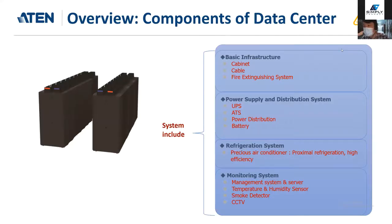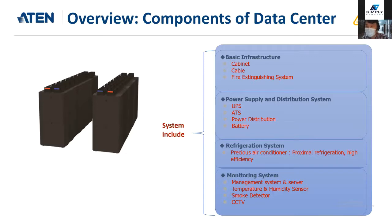I'd like to start with the overview components of the data center. The system includes basic infrastructure: cabinets for servers, cables, and fire extinguishing systems. They will have a complete power supply distribution system — UPS, ATS for distribution, and battery. They also include a refrigeration system to maintain suitable airflow and temperature levels, along with a monitoring system with management servers, temperature and humidity sensors, smoke detectors, and CCTV.